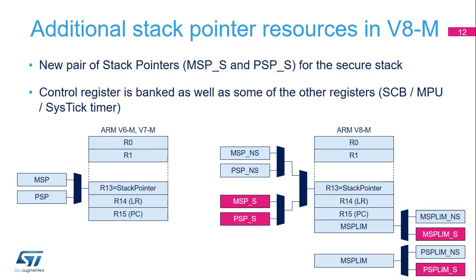The ARMv8-M architecture provides new features regarding stack pointers. In ARMv7-M, two stack pointers are banked: the Main Stack Pointer (MSP) and the Process Stack Pointer (PSP). The ARMv8-M implements another level of banking between secure and non-secure states. Globally, four stack pointers are present — two pairs of MSP and PSP, one per security level. Furthermore, new stack limit registers enable hardware to detect stack overflow conditions.